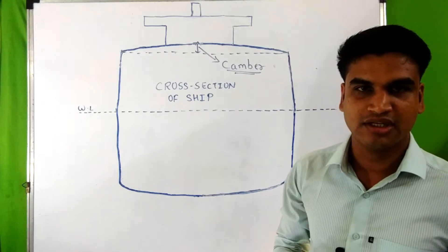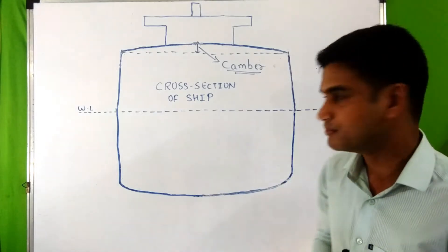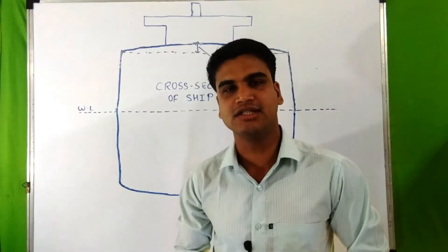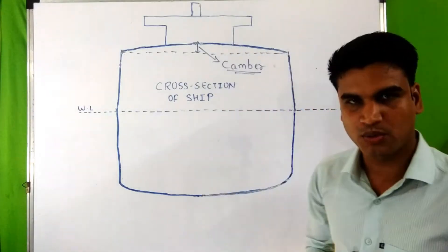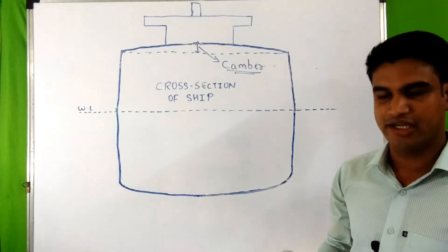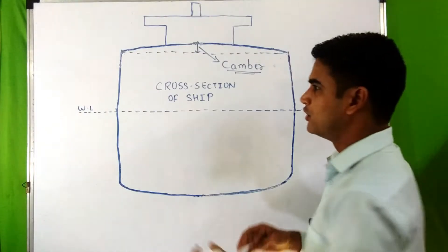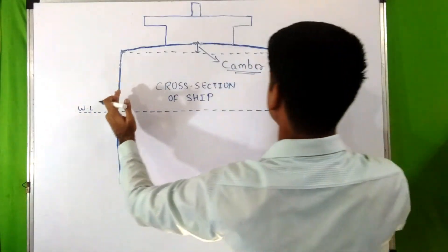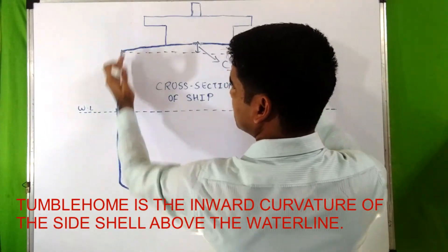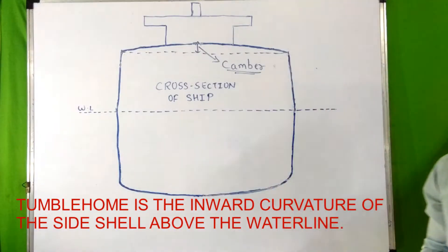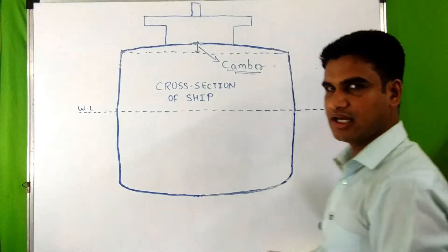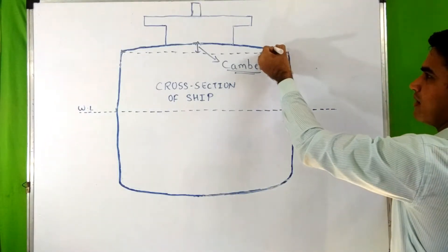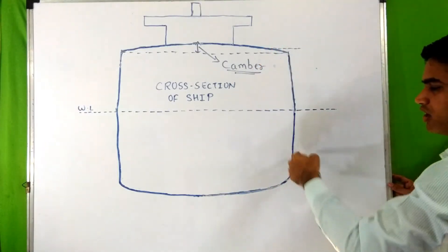Camber also provides some extra longitudinal strength to the ship structure, and it is measured at midship. Next is tumble home. Tumble home is also measured at midship. It is actually the inward curvature of the ship side shells above the water level. It is measured as the horizontal distance from the perpendicular drawn to the sheer strake to the turn of the bilge.